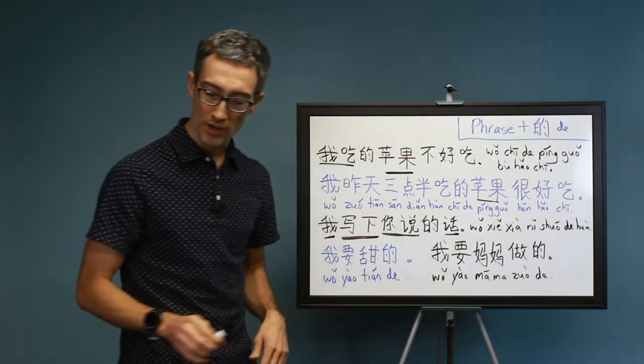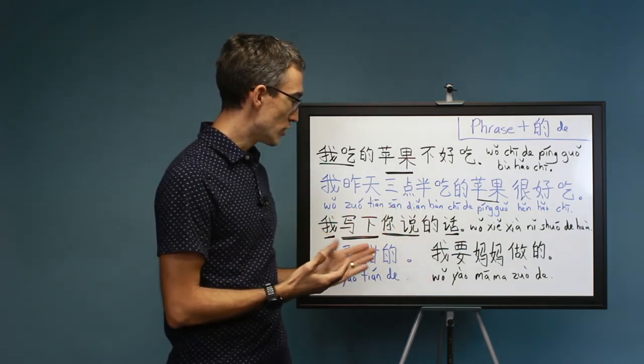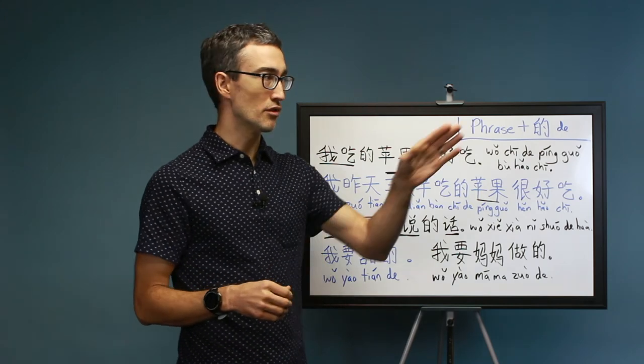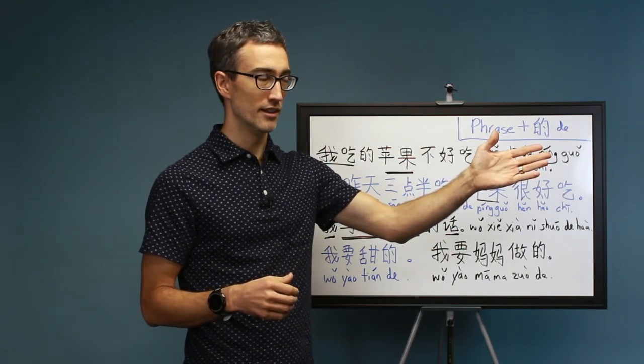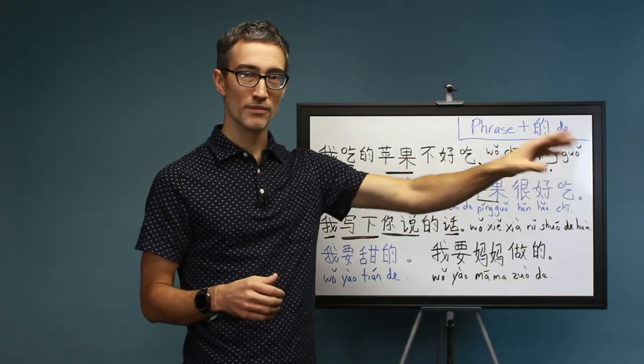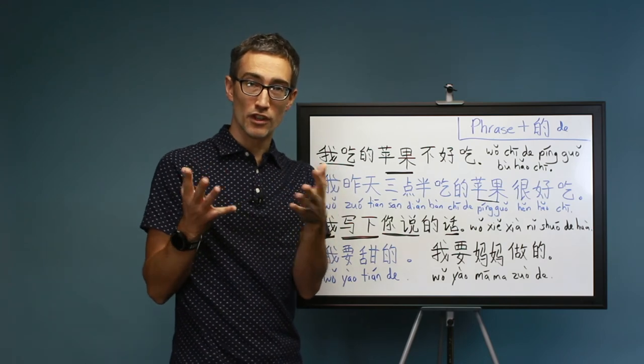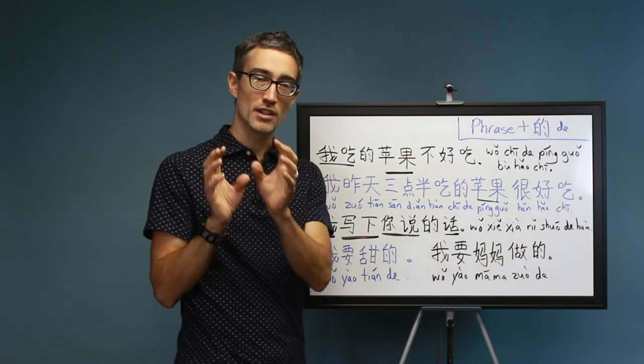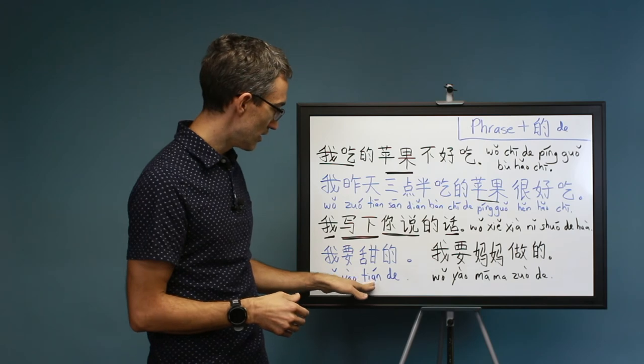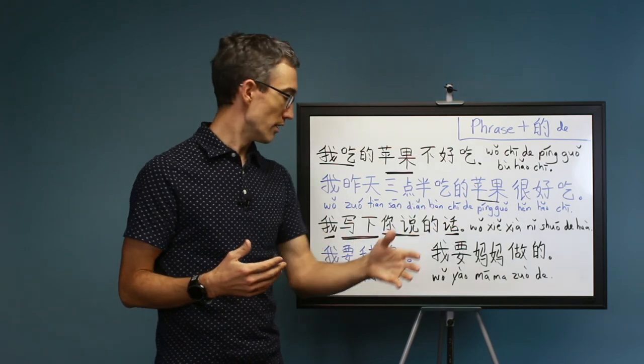And then here, down here, there's two other examples. I just want to point out that like any adjective, these more complex phrases, you can drop the noun that comes after de if it's understood in context. Just like in English, we would say, give me the red one. The red what? The red pencil. But in context, the person knows I'm talking about pencil. So I say, give me the red one. You can do that exactly in Chinese. You just drop the noun. The word de already tells you there's a noun coming after it that's been dropped.